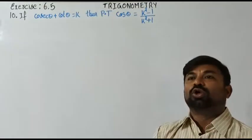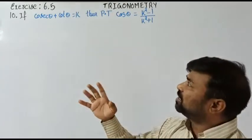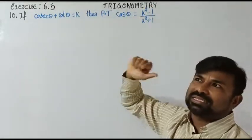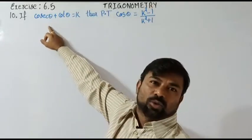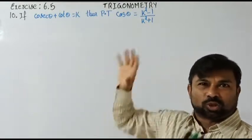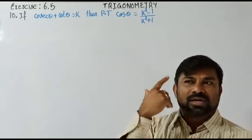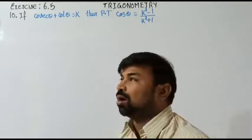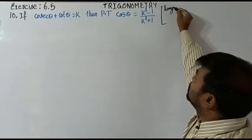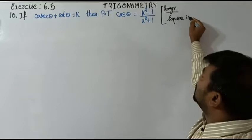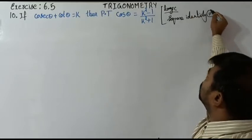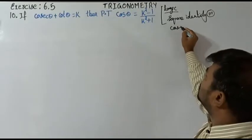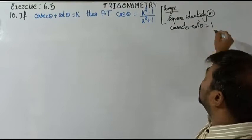Let's think about how to approach this. The answer is having squares, and the question starts from cosecant and cot. So squares are there and cosecant and cot are there. When we think about a square identity dealing with cosecant and cot, we have to think of square identity 3: cosecant squared theta minus cot squared theta is equal to 1. That's the logic.